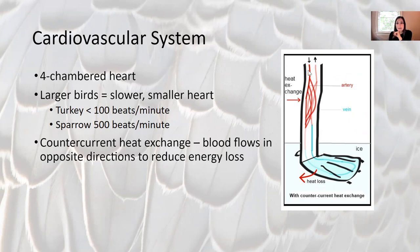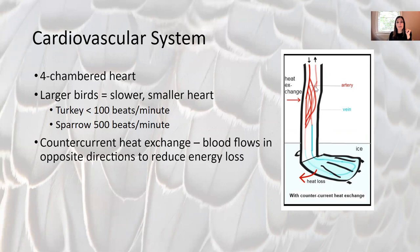In countercurrent exchange, blood coming from the heart travels down arteries to the feet and enters the icy water, becoming cold. Sending ice-cold blood back to the heart would not be good for the animal. Instead, those blood vessels in the legs are intermingled so that the hot blood coming from the heart warms up the cold blood coming away from the feet, meaning the blood returning to the heart isn't quite so cold — reducing the energy that would be lost otherwise.